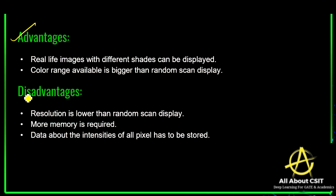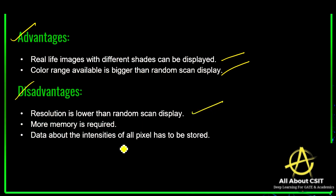Now let's look at the advantages and disadvantages of raster scan. Advantages: real-life images with different shades can be displayed, and the color range available is bigger than random scan since raster scan supports a huge variety of colors. Disadvantages: resolution is lower compared to random scan, more memory is required (whereas random scan requires less memory), and data about the intensities of all pixels must be stored.